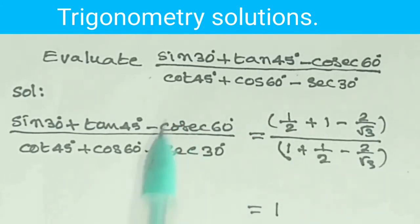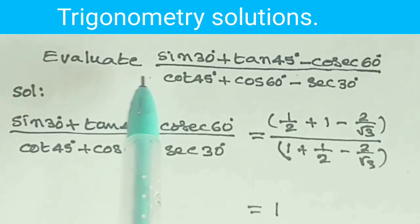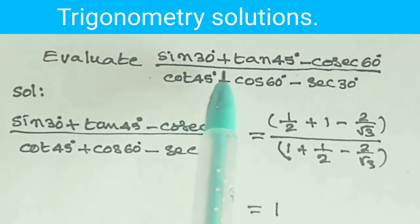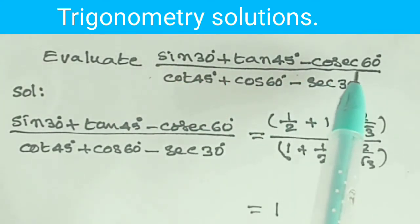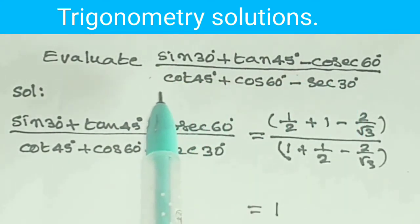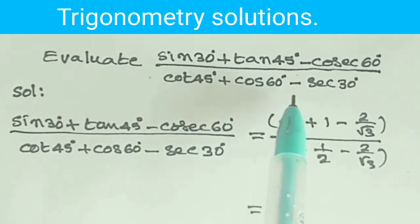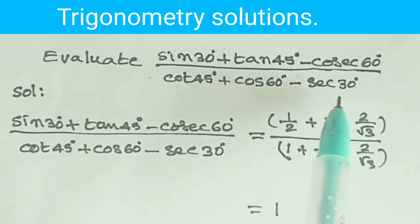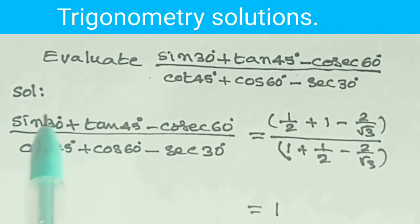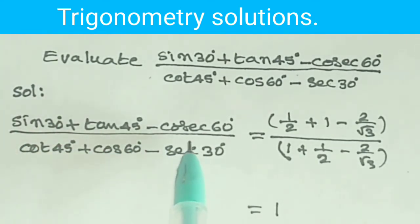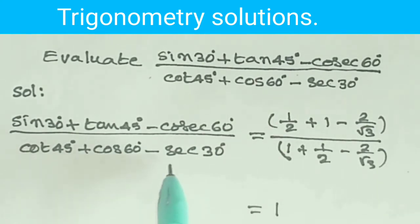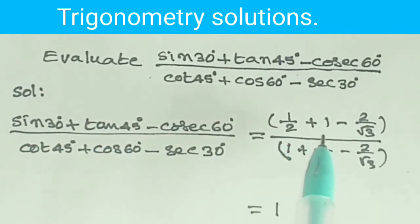Evaluate: sin 30 degrees plus tan 45 degrees minus cosecant 60 degrees, over cot 45 degrees plus cos 60 degrees minus secant 30 degrees.